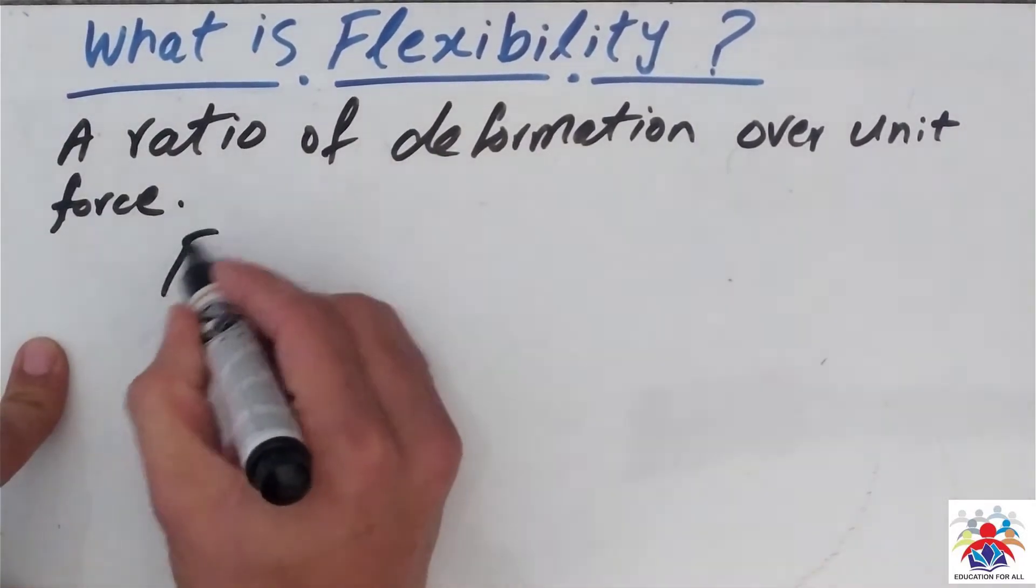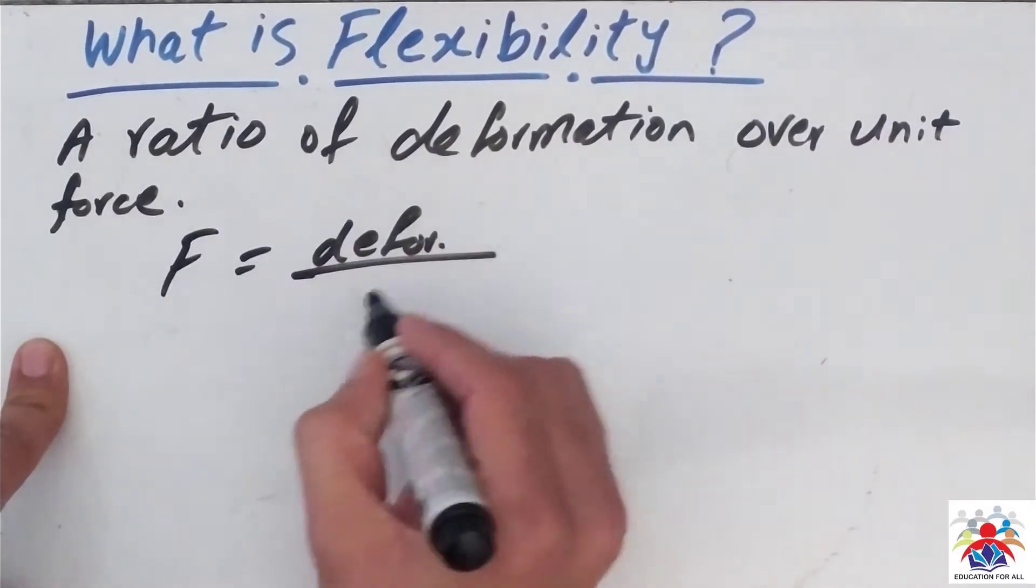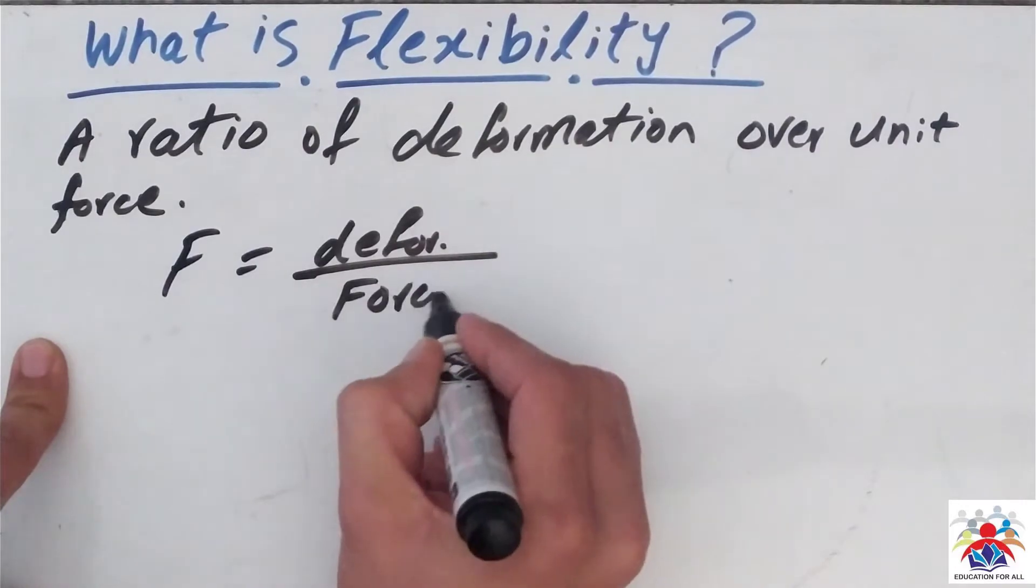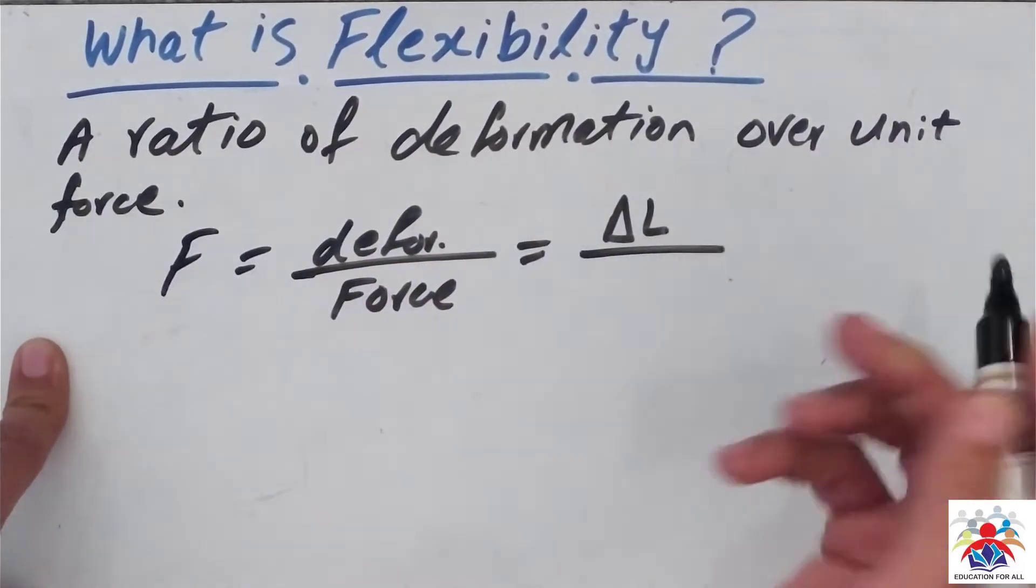F equals deformation over force, in other words, change in length or change in width. Deformation could be in any direction over force.